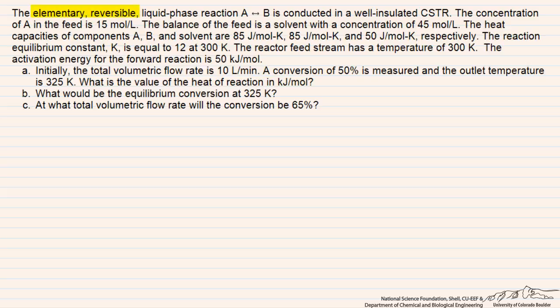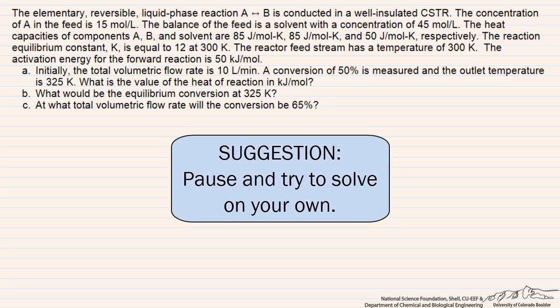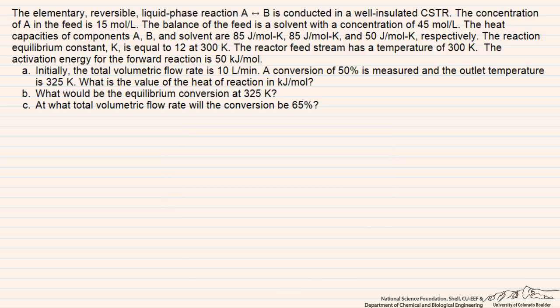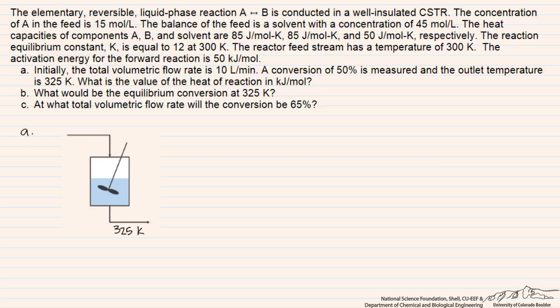In this problem, we're dealing with an elementary reversible reaction of the form A goes to B in a liquid phase CSTR, and that CSTR is adiabatic. In part A, we want to use the given information about the feed and the outlet streams to determine the heat of reaction. The conversion is 50%, the outlet temperature is 325 Kelvin, and the inlet temperature is 300 Kelvin. Because there's a rise in temperature for this adiabatic reaction, we expect the reaction is exothermic. So if we do a little sketch of our reactor, we have the outlet at 325 K, the inlet at 300 K, and a conversion of 50%.